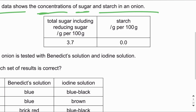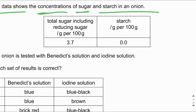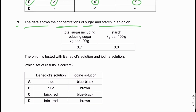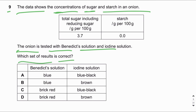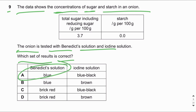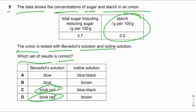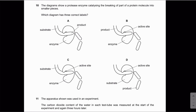MCQ number nine: The data shows the concentrations of sugar and starch in an onion. The onion contains 3.7 g per 100 g of reducing sugar and does not contain starch. The onion is tested with Benedict's solution and iodine solution. Since it contains reducing sugar, the Benedict's test will be positive giving a brick-red colour. Since it contains no starch, the iodine test will be negative giving a yellow-brown colour. The answer is D.